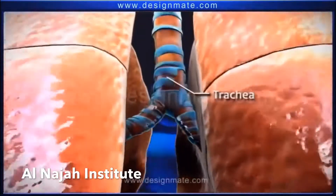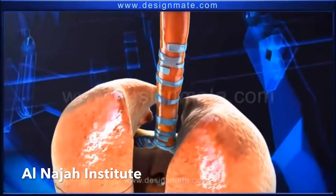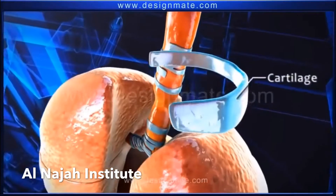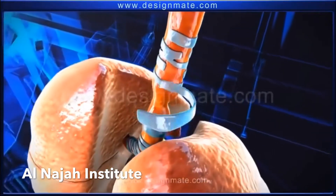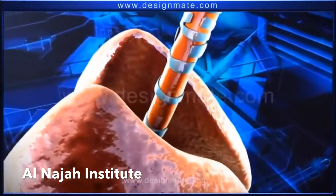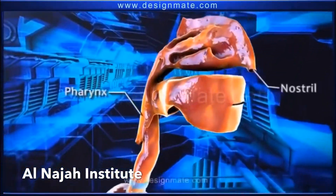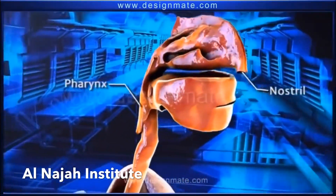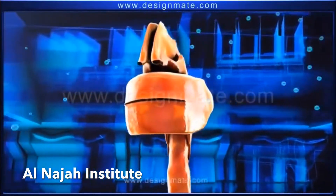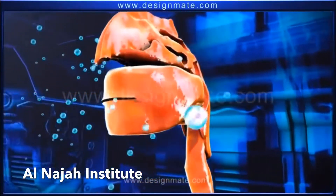The trachea has incomplete C-shaped rings of cartilage which prevent the tracheal wall from collapsing. The trachea leads into the pharynx, which is connected to the nostrils.